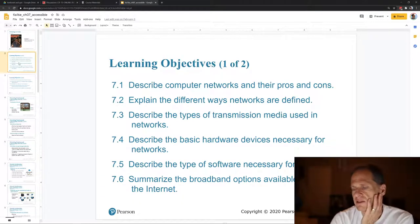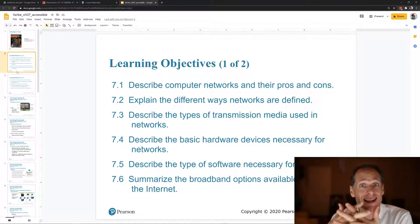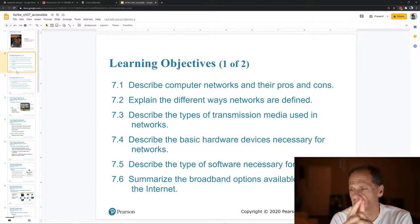Some of the learning objectives of this chapter are to describe computer networks and their pros and cons. And so we already kind of talked about that, right? We talked about the pros. We like networks because they allow us to share information and to share physical resources. Those are the two benefits of networks, share information, share physical resources. So we could share a printer.